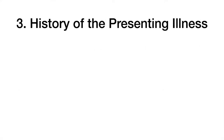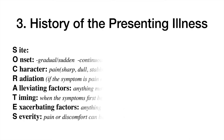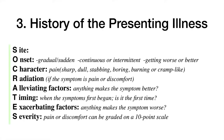For the history of presenting illness, ask all information about the current symptom using the mnemonic SOCRATES — particularly useful for pain but applicable to other symptoms too. S stands for Site: ask where exactly the pain is, and you can ask the patient to point to the location on their body. Note that site is not applicable to symptoms like cough, shortness of breath, or diarrhea.